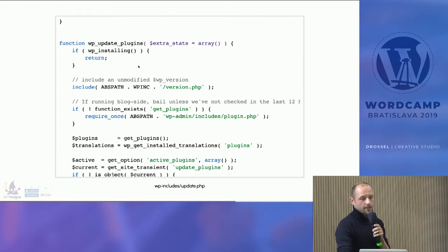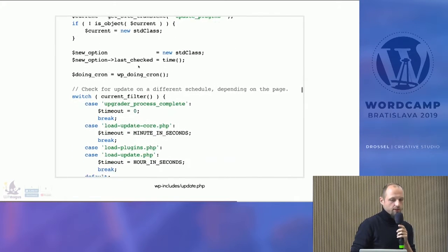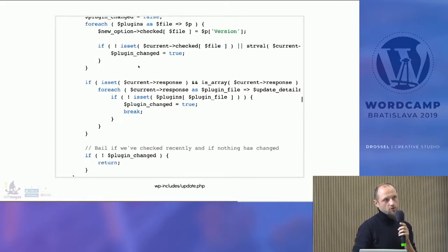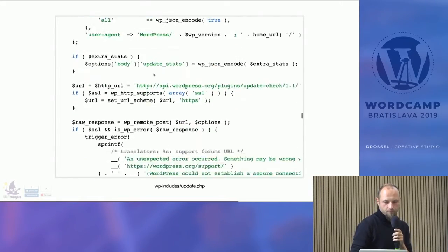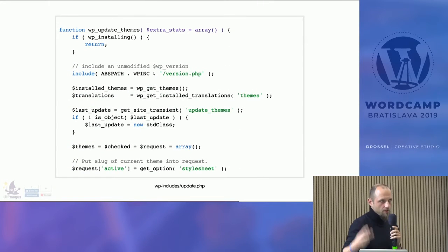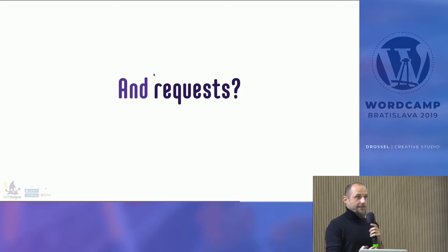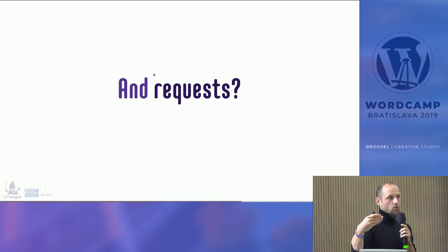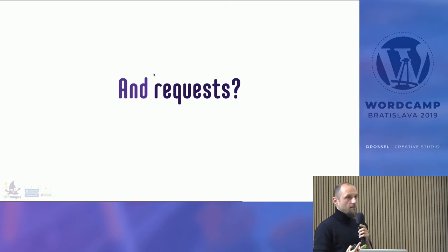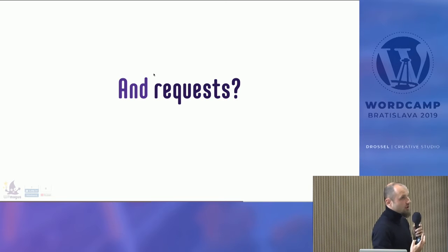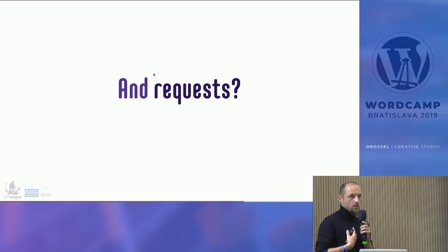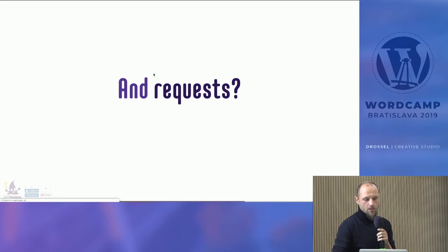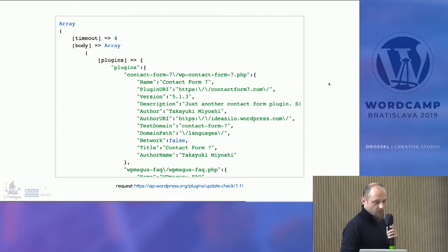Here's wp_update_plugins — it's more or less the same code, so I won't go through this part. And there is also wp_update_themes — again, the same code. Now, what data is sent to the server and how does the response look? This is important because it describes what the WordPress server knows about our site and what we can learn from the server.